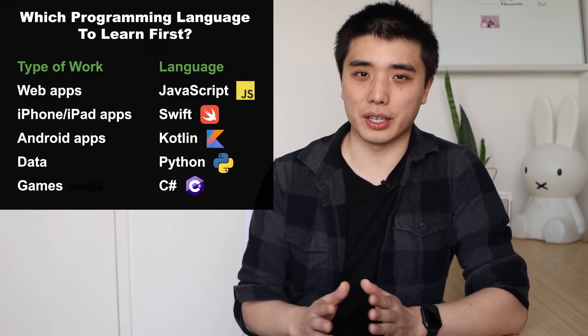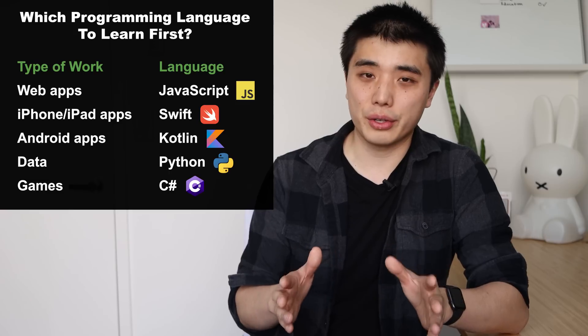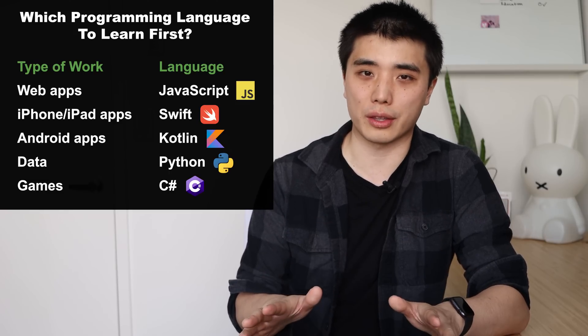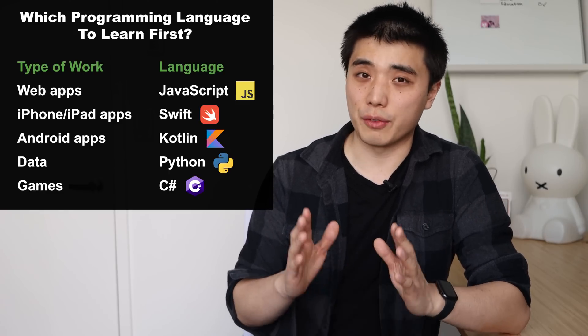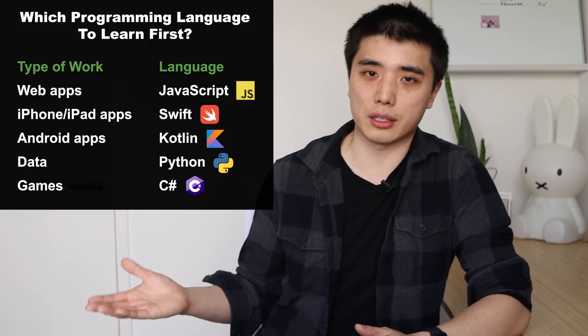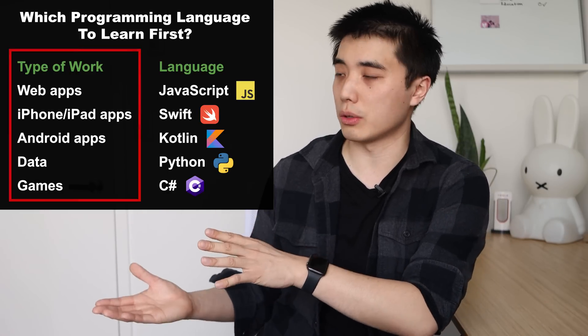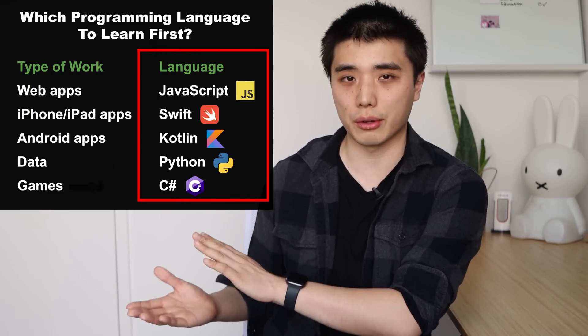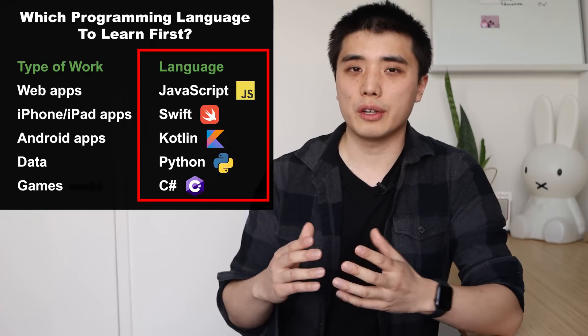So the first question you have to ask yourself is: are you the type of person that knows exactly what you want to work on and you just want to work on that? If you answer yes to that, then this table is the answer for you. You just find what you want to do on the left column and on the right column is the programming language that you should learn. But what if you're not that type of person? What if you just want to know the easiest language to get started with and get a job with? Well, that's what we're going to talk about in this lesson.